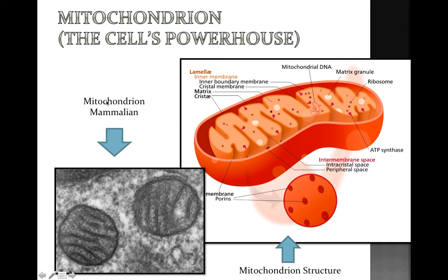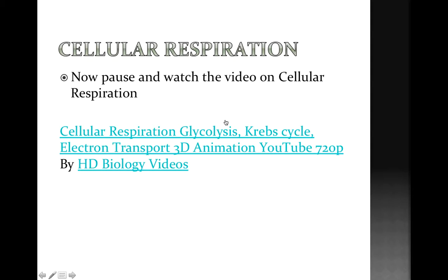We talked before about the mitochondria — this is the powerhouse of the cell. The mitochondria is the place where the ATP molecule is synthesized, and the energy from the breaking down of the carbons is mainly produced. It is very interesting to see what happens in the intermembrane space, the inner membrane of the mitochondrion, and the matrix. The action really is between these spaces: the intermembrane space, the inner membrane, and the matrix of the mitochondrion. I would like you to pause this and watch the video on cellular respiration.